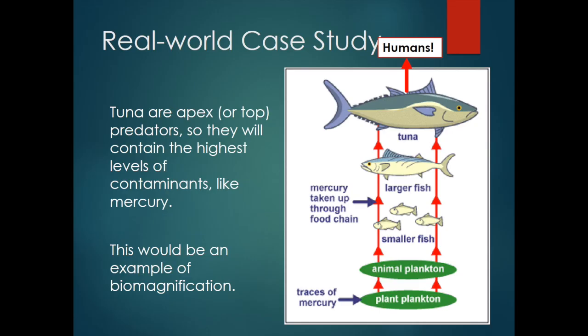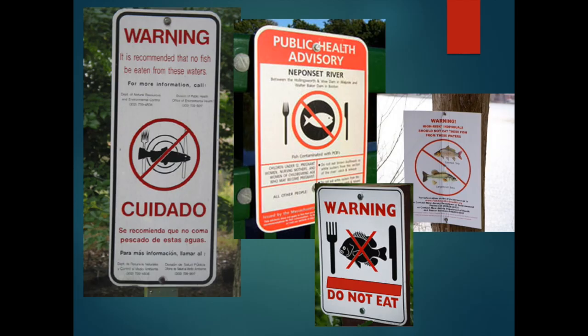It's important to remember that biomagnification isn't just a problem for the environment. We eat tuna, so we're gaining an even higher level of contamination if we eat tuna often. This is why there are fishing restrictions and warnings in place — to prevent us from bioaccumulating too much contaminants that could make us sick.